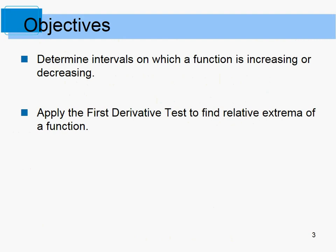We want to determine intervals on which a function is increasing or decreasing, and be able to apply the first derivative test to find relative extrema of a function. If I give you a graph, can you tell me where the graph is increasing and decreasing? Yeah, you can just look at it and say it's going up here, it's going down here. But what if I just give you the function itself? It's a bit more difficult to find the intervals without using a graph.